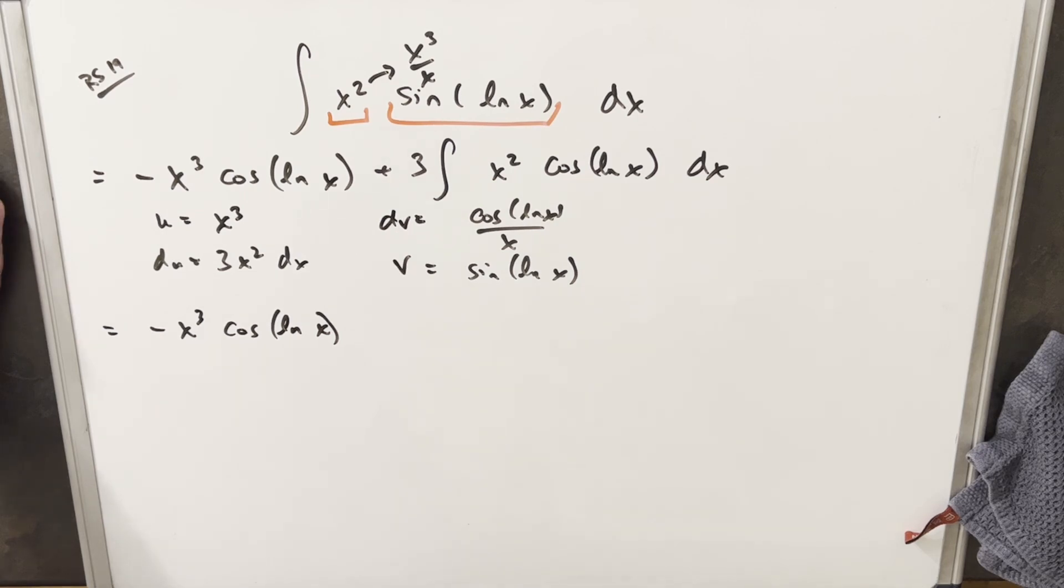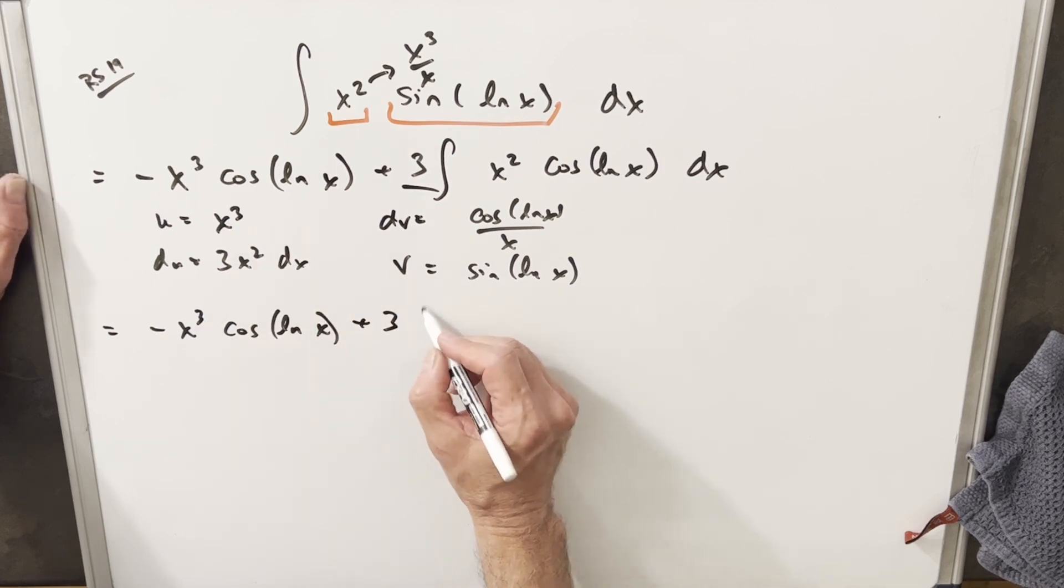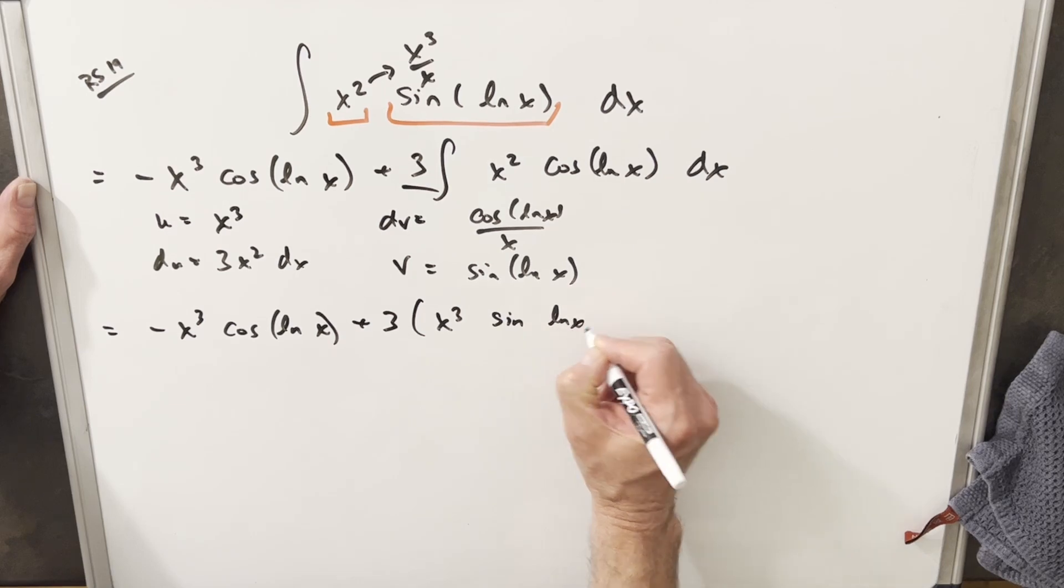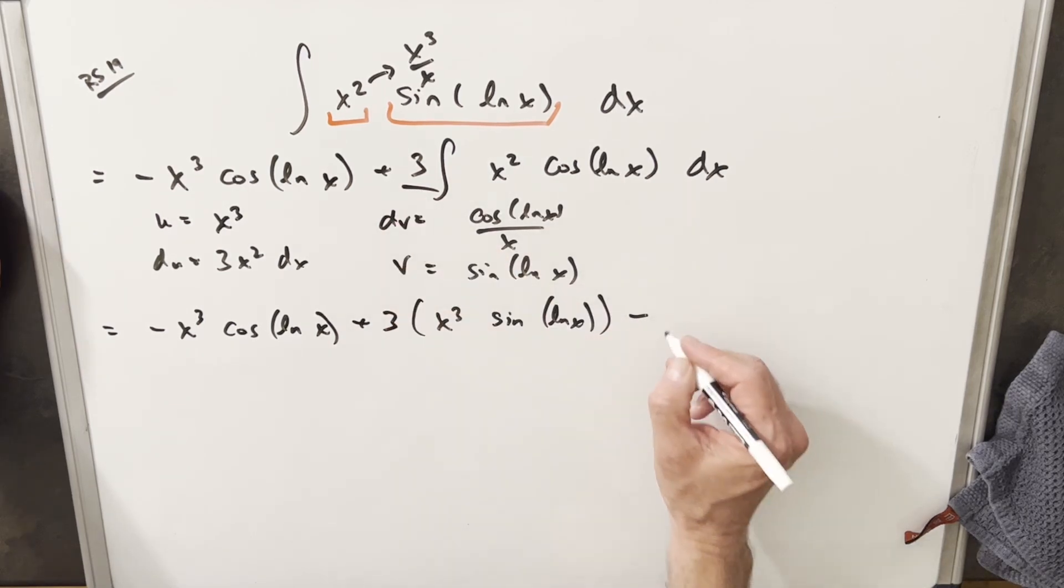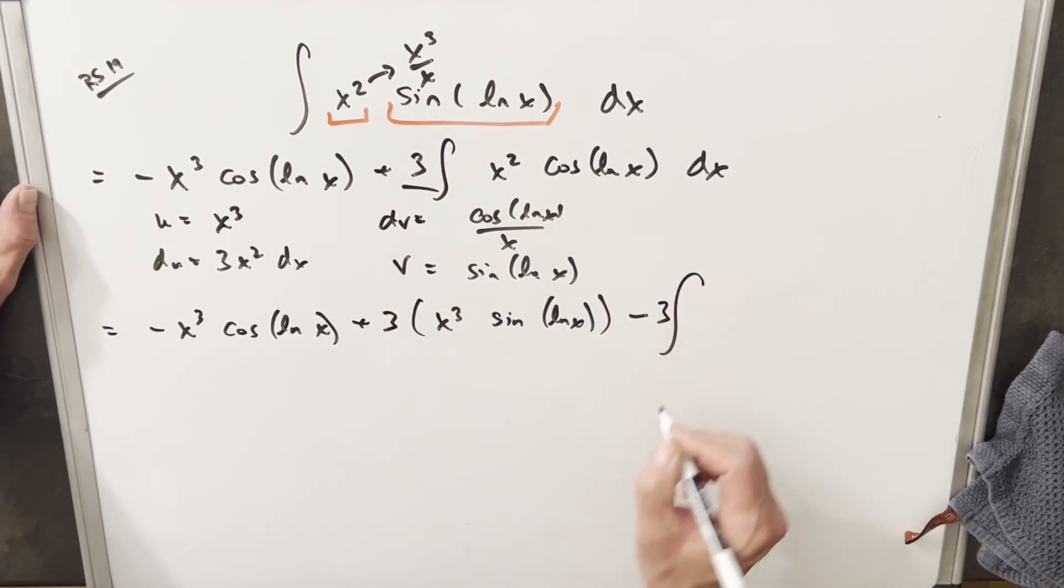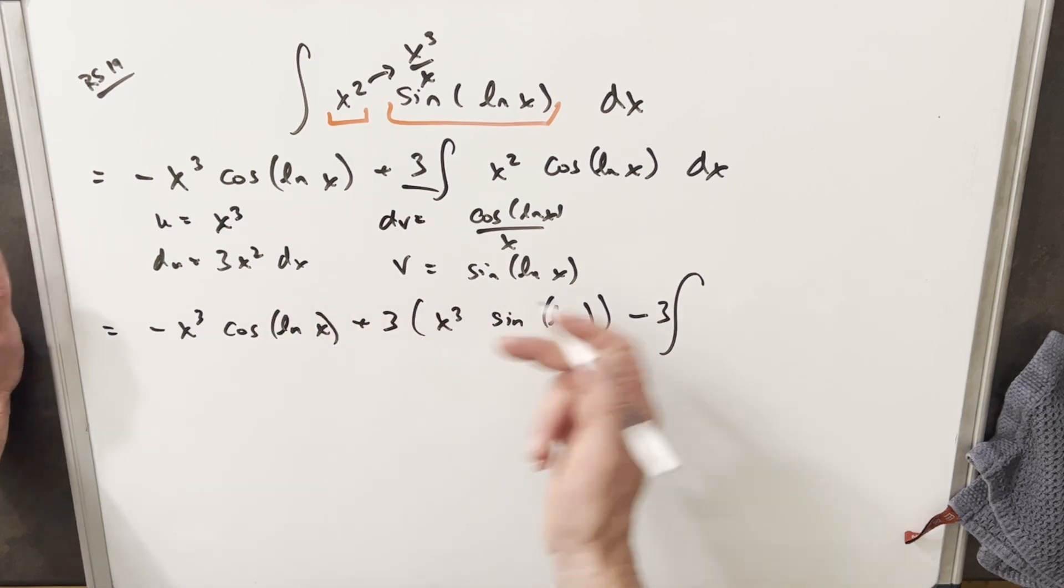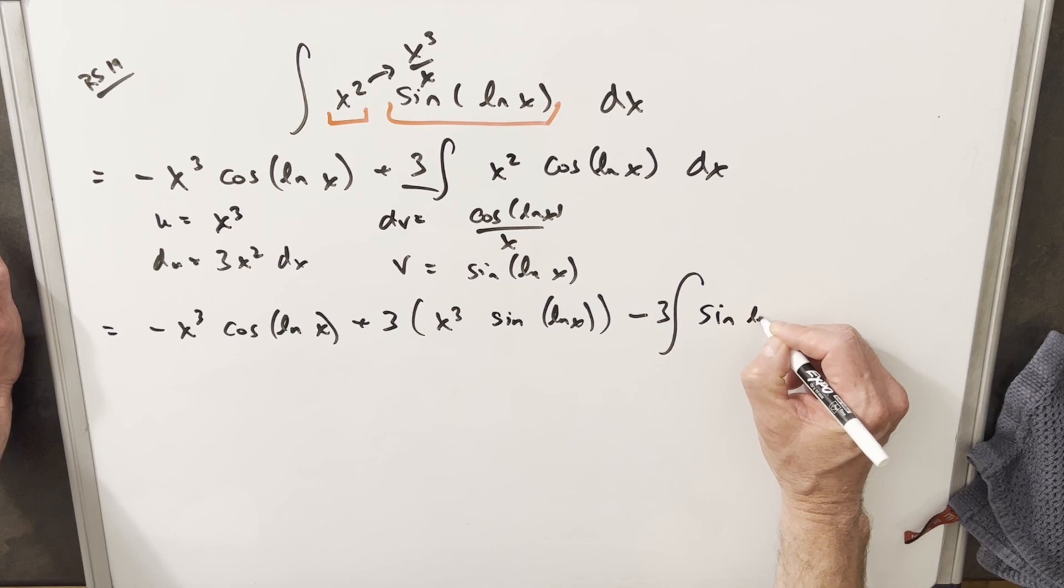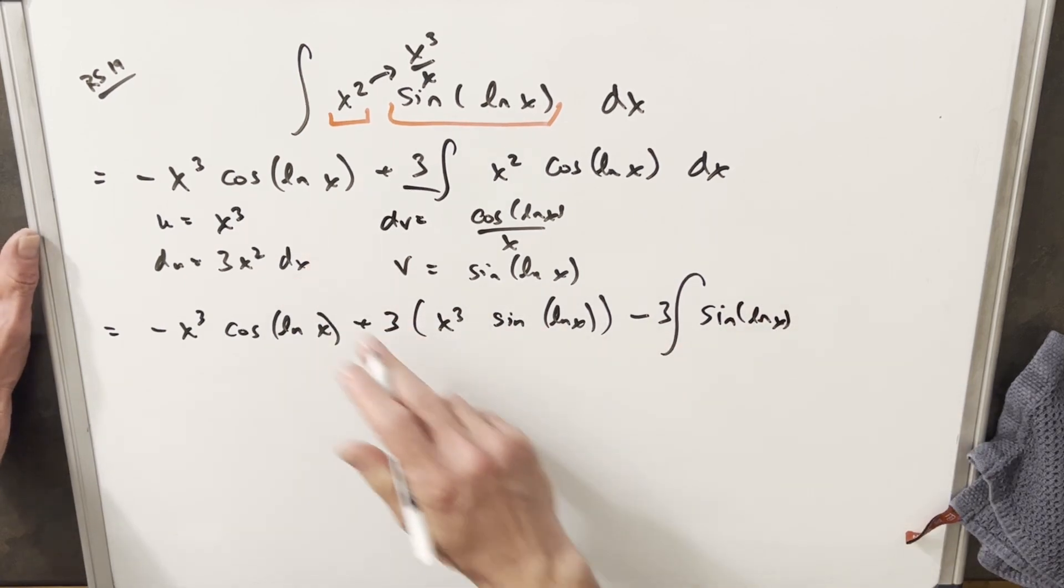I erased the formula, but we're using integration by parts formula again. We're going to have this 3 outside of the integral. Then we're going to have uv, so this is going to be x cubed, and then we're going to have sine ln x. And we're going to have minus. I'm going to distribute this 3 here. And this piece is going to be an integral. Then for our integral, we're going to have vd, so we're going to have our v, which is sine ln x, and then here, we're going to have this value, which is just going to be 3x squared dx.